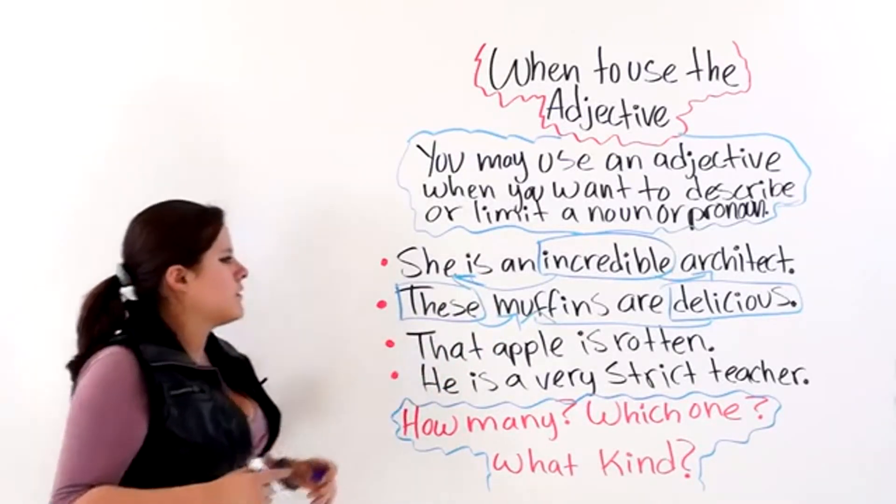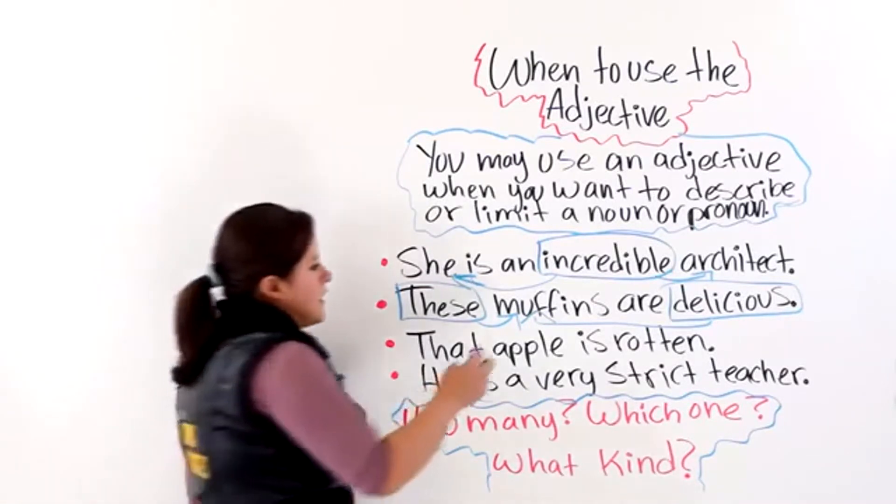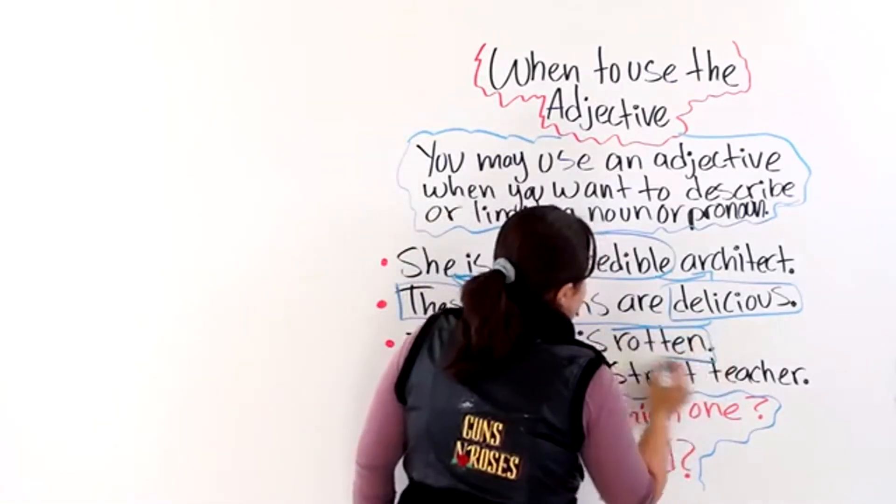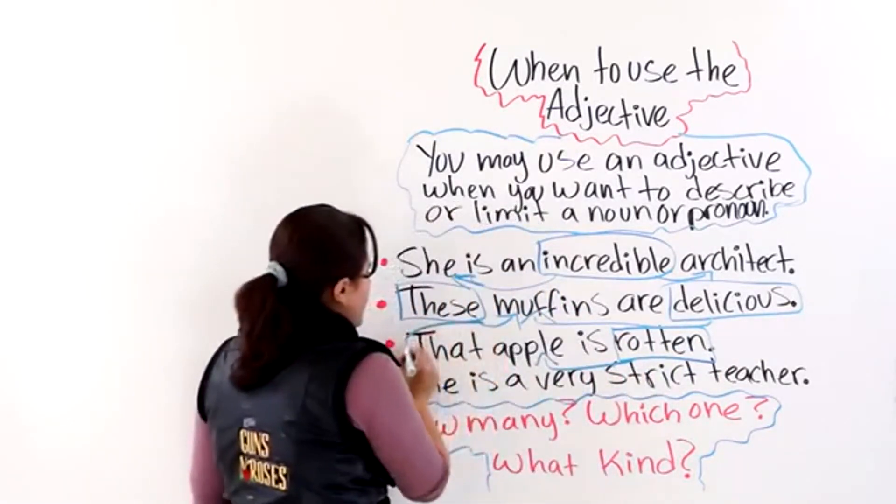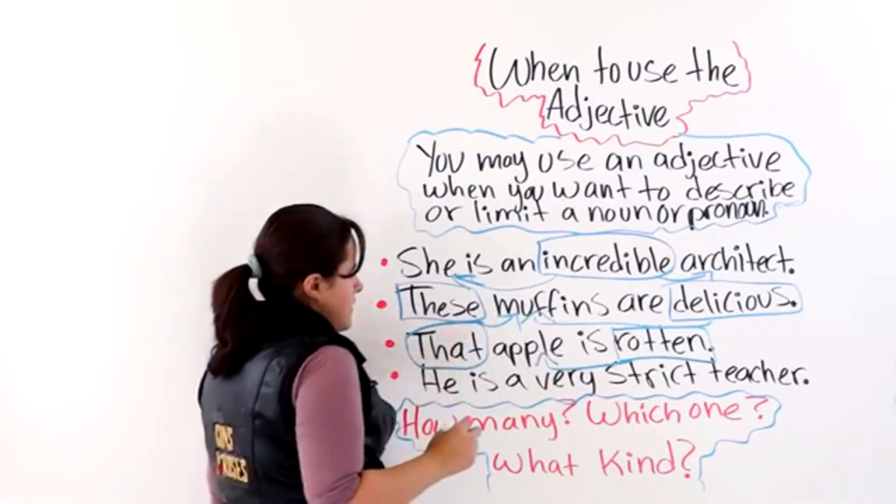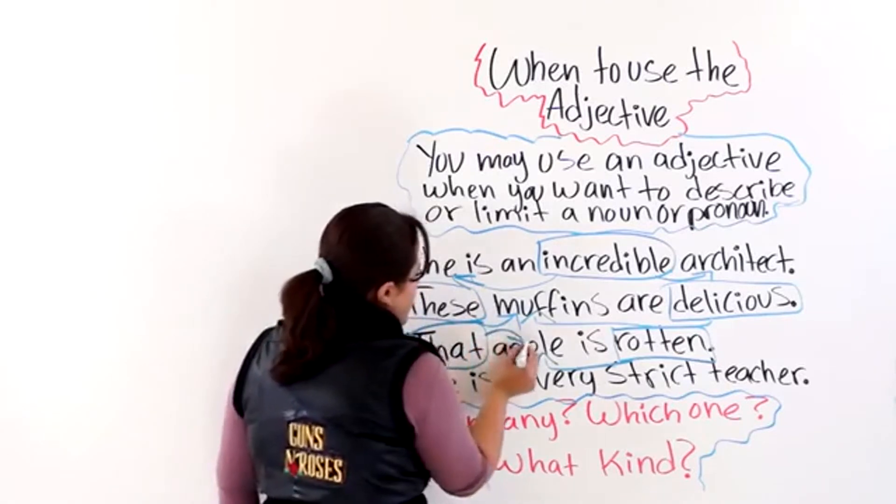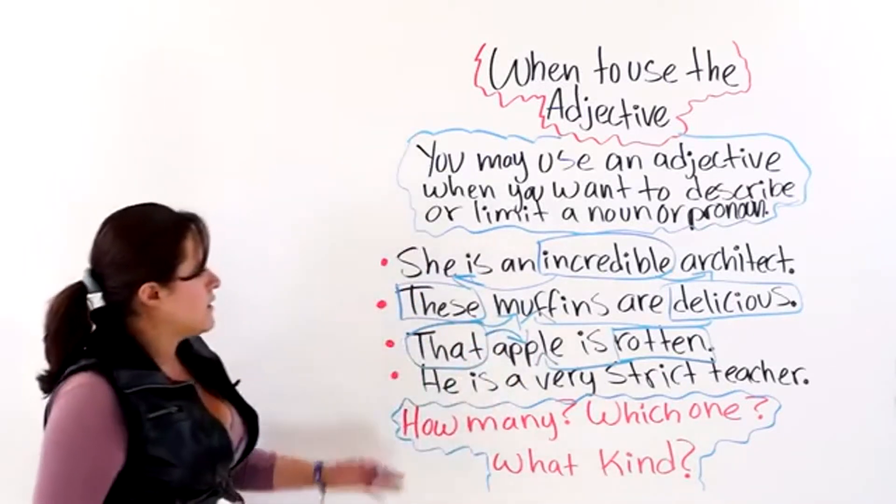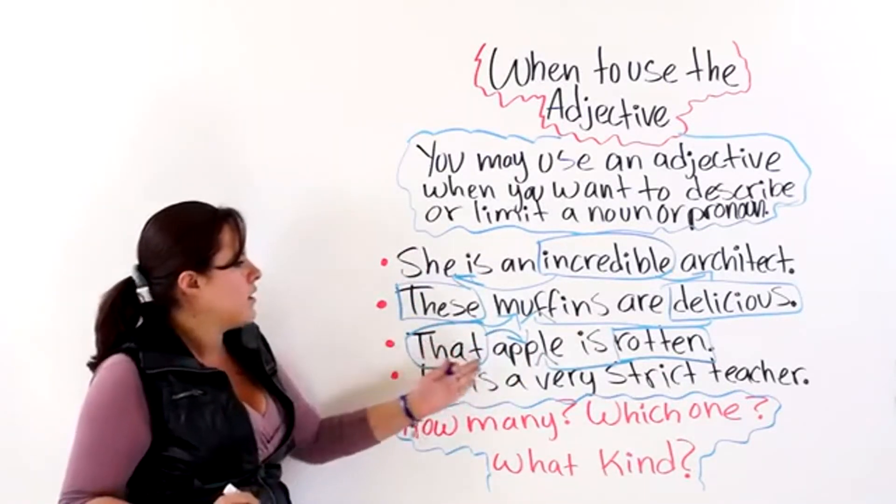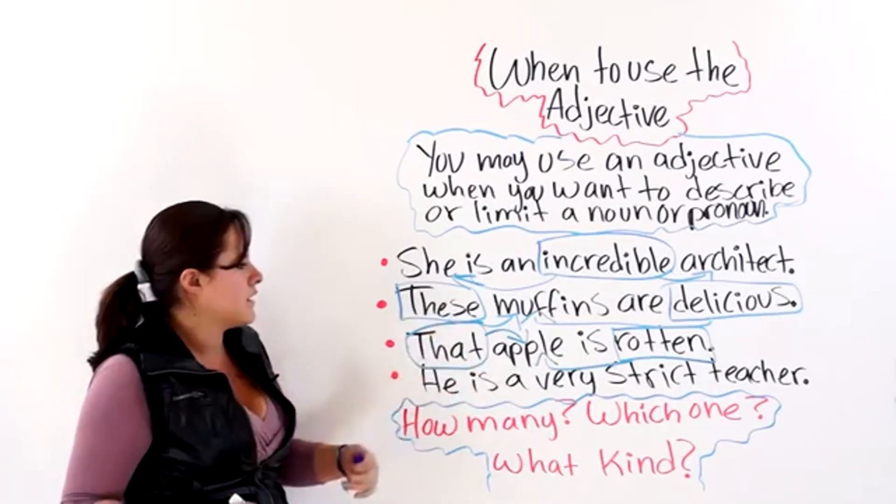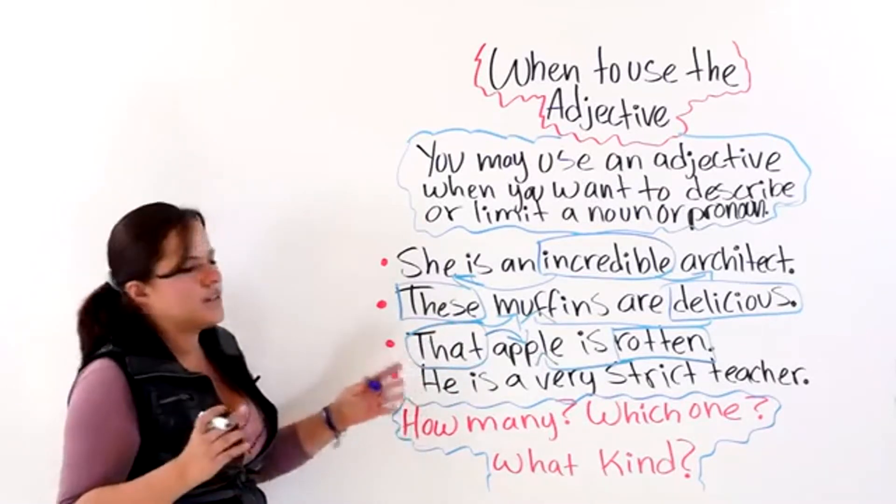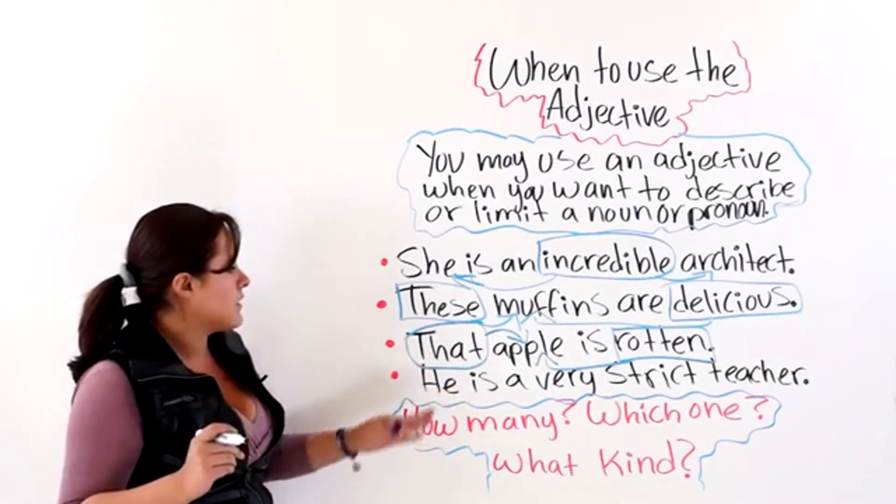The next one says, that apple is rotten. We have rotten here that is describing the apple. And we have that that is telling you which one, that apple. So, those two adjectives are telling you which one and what kind. That apple is rotten.